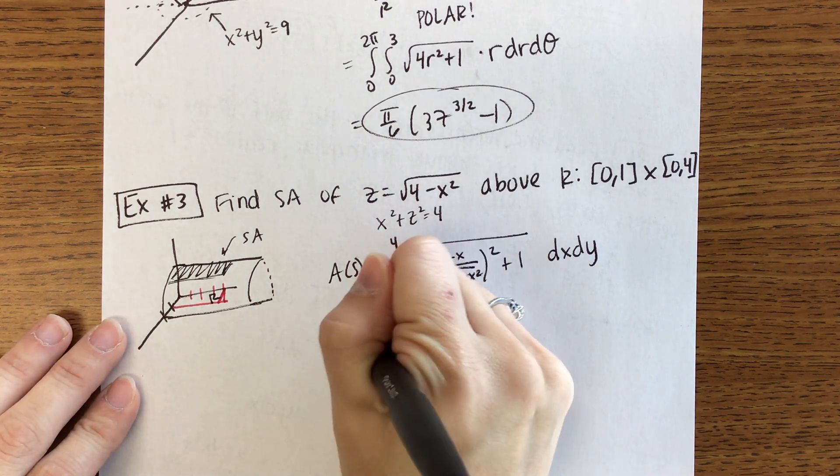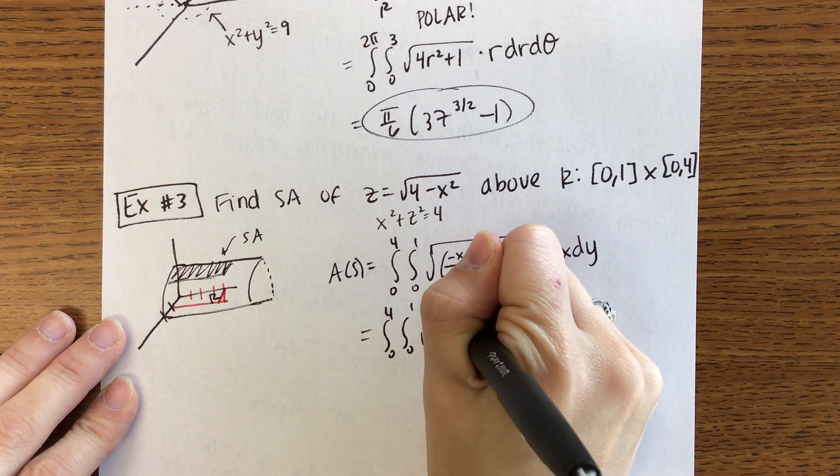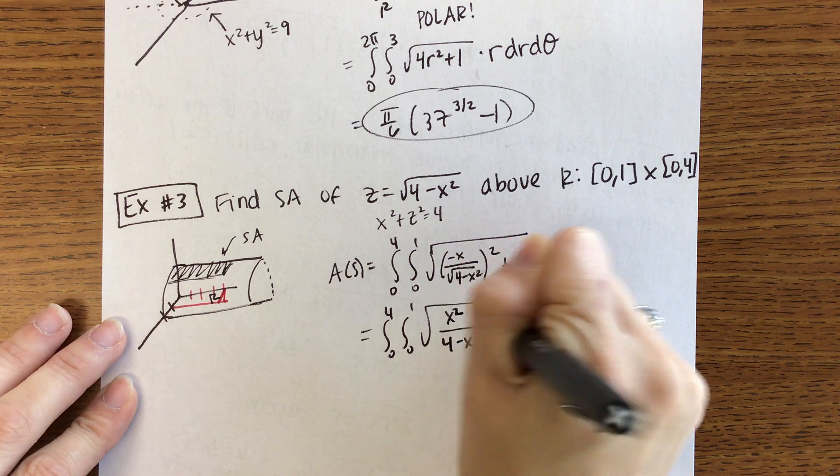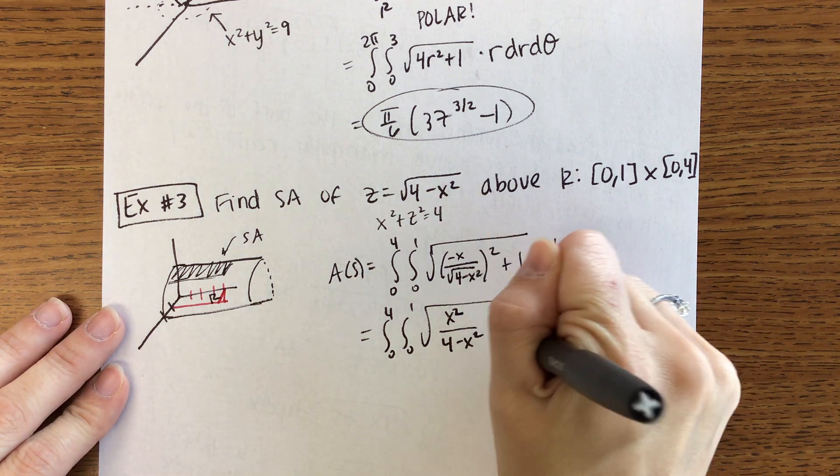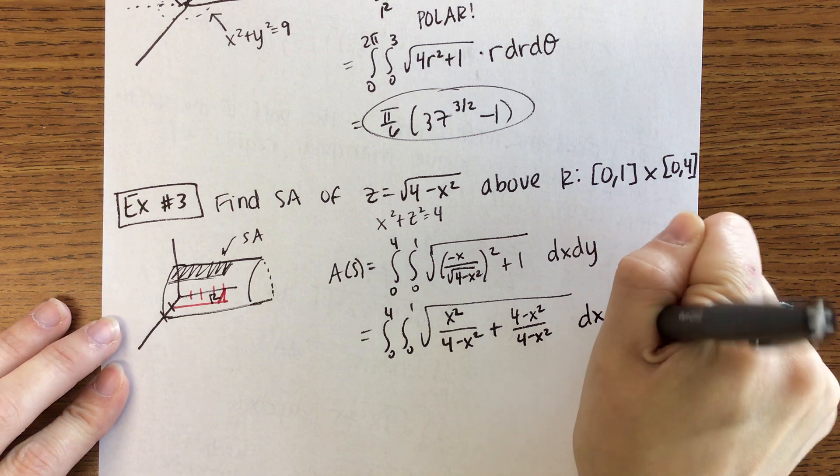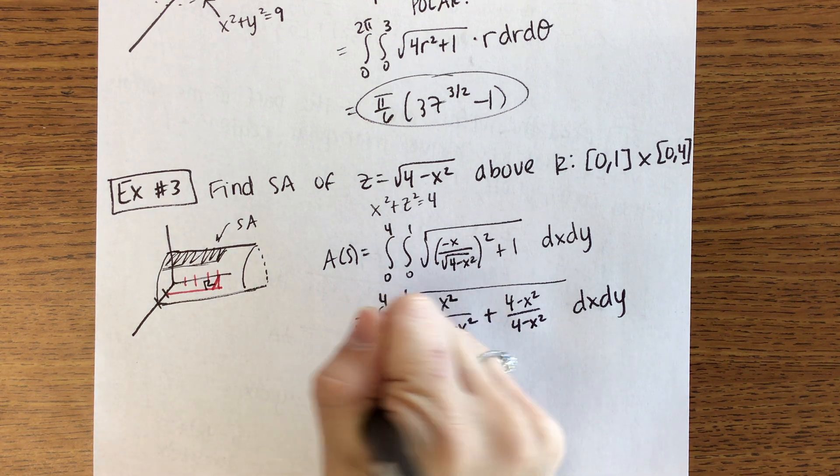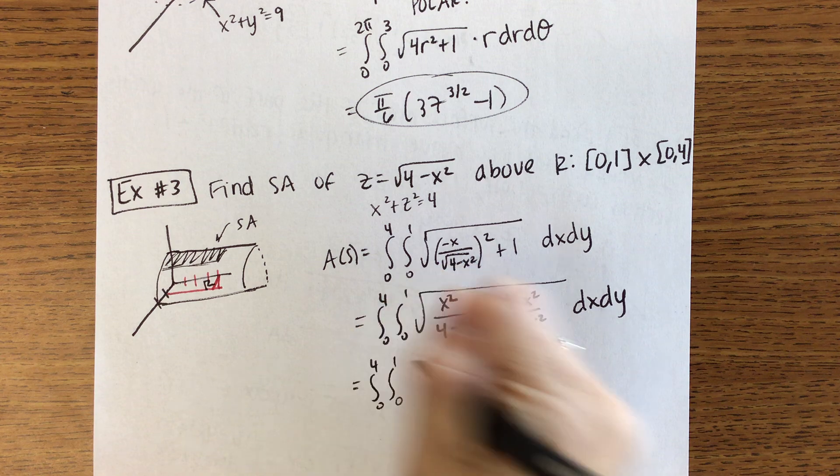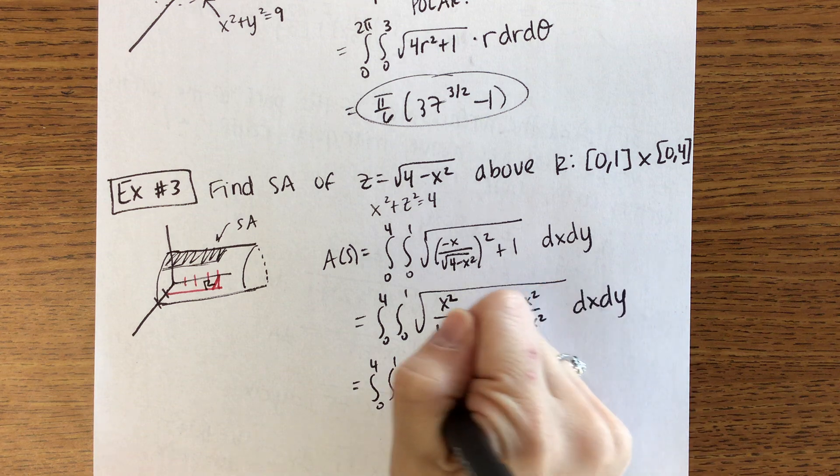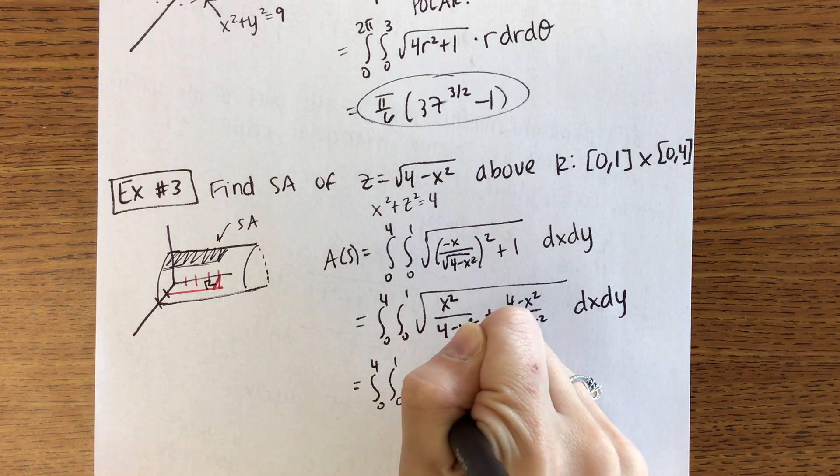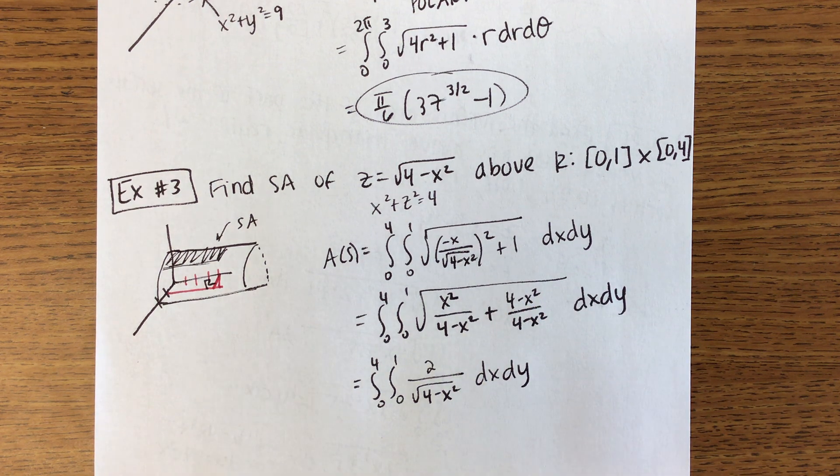So this then we have X squared over 4 minus X squared. We're going to find a common denominator so that 1 is 4 minus X squared over 4 minus X squared. So this ends up being then 4 but I'm going to take the square root of that so 2 over the square root of 4 minus X squared.